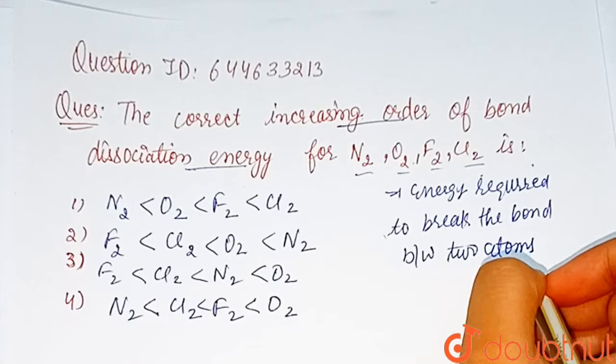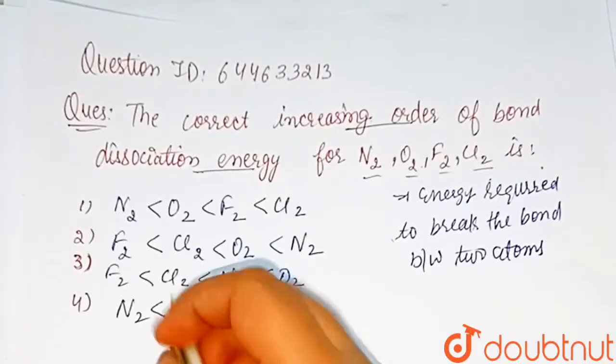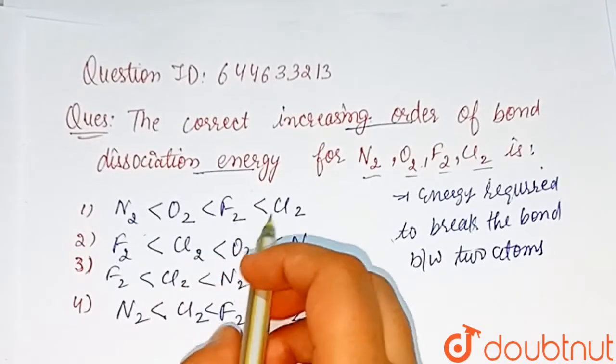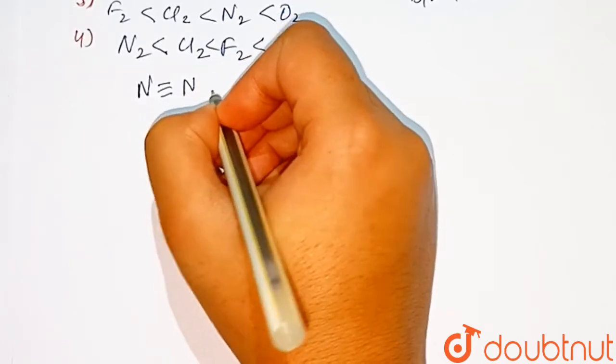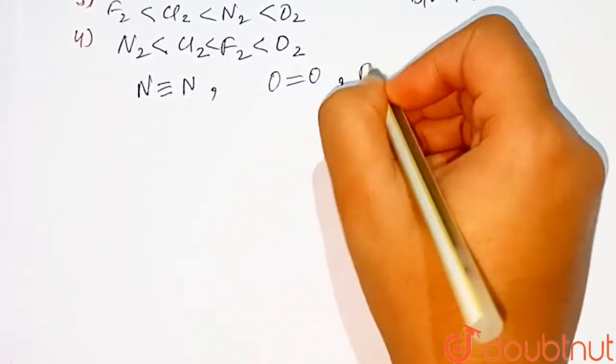This is called bond dissociation energy. Let us see the option here: nitrogen, oxygen, fluorine, chlorine. In nitrogen, as we know that triple bond is present, and in oxygen double bond is present, and in fluorine